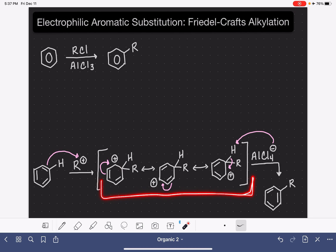We have all three of our sigma complex resonance structures. At the end, the base AlCl4- grabs the hydrogen from the sigma complex, returns electrons into the ring, which returns aromaticity, and here is our product.